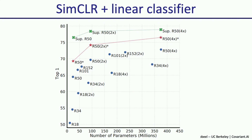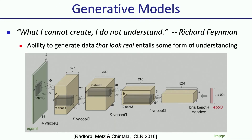One quick side note: sometimes people just care about unsupervised learning in itself — often called generative models. In generative models, a network goes from code to image rather than image to code. You can train networks to generate new images that look realistic, starting from some initial images and improving over training time.